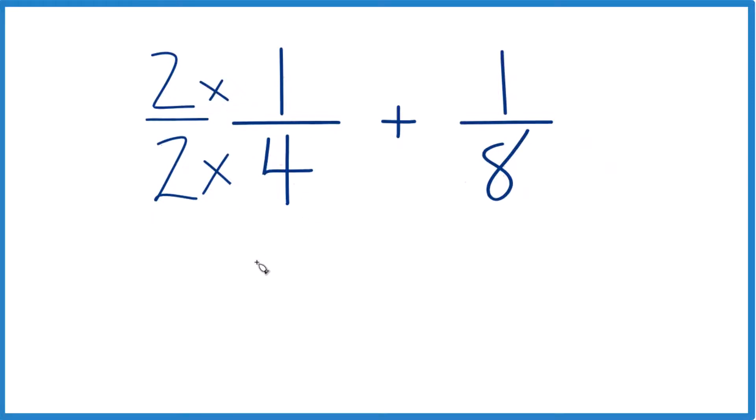Because now, 2 times 1, that equals 2. 2 times 4, that equals 8. 2 eighths, that's the same thing as 1 fourth. They're equivalent fractions.